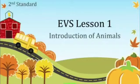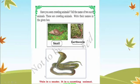Hello Second Standard children, today we are learning EVS. We have already covered this chapter for you. Next page: have you seen crawling animals? Tell the name of two such animals. These are crawling animals — the animals which crawl. You know what is the meaning of crawl.